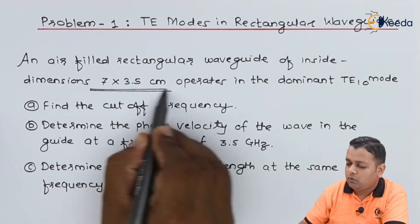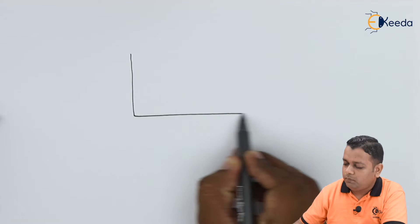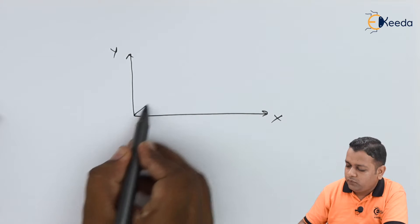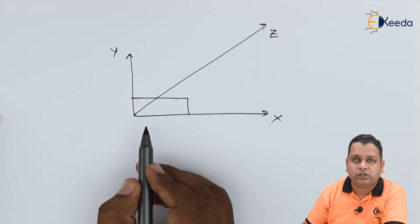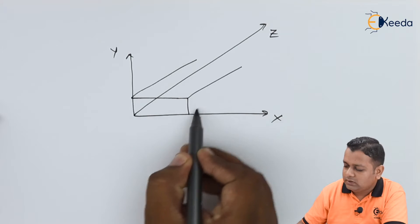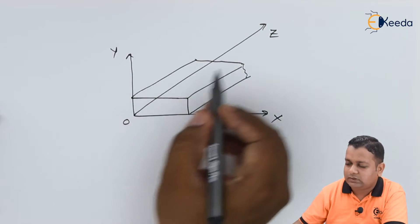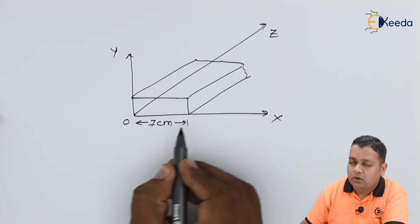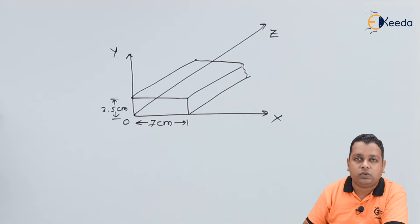First of all, as the dimensions are provided to us, we shall draw a simple schematic to understand the situation given in the problem. We consider three mutually perpendicular axes: the x-axis, y-axis, and z-axis. We have such a cross section along the length of the waveguide. For the x-axis, y-axis, and z-axis intersecting at origin O, we have 7 cm along the x dimension and 3.5 cm along the y dimension as specified in the problem statement.